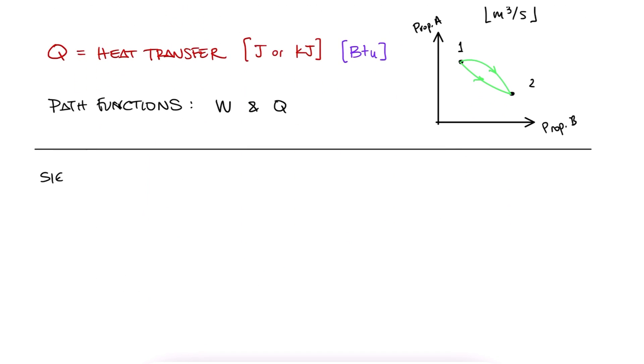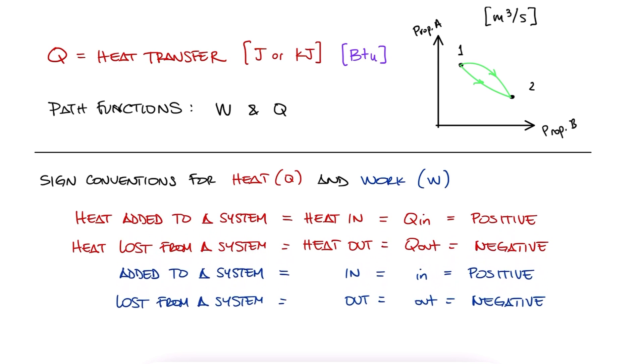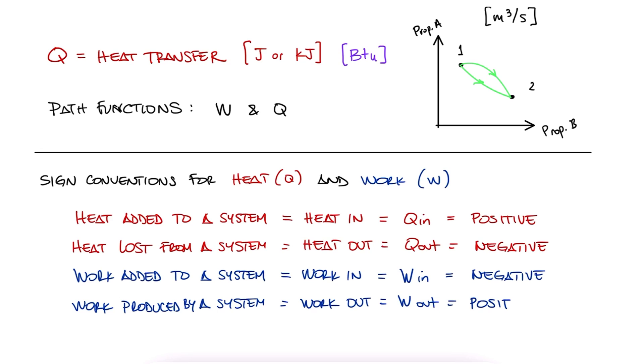One of the most important conventions in thermodynamics is the sign convention for heat and work. And yes, if you already know anything about it, it's a very silly convention. Adding heat to a system is positive, and heat coming out of a system is negative. And for work, it's the opposite. If we are putting work into the system, work is negative, and if work is being produced by the system, work is positive. This means that work in is negative, and work out is positive.